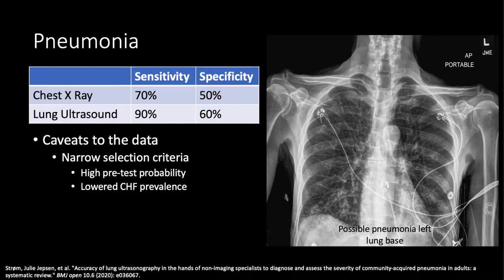There are some caveats to the point-of-care ultrasound data when it comes to pneumonia. Most studies include patients just like this — very narrow selection criteria. They look for patients with multiple complaints consistent with pneumonia, which lowers the prevalence of CHF in these data sets. Because as we've learned, B-lines occur in both CHF and pneumonia, and so the specificity of lung ultrasound is not great since pneumonia can mimic several other pulmonary conditions.